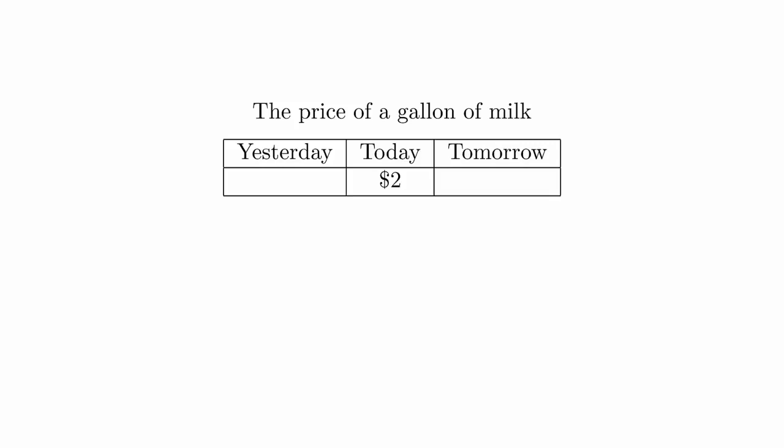Imagine if you went to the store and a gallon of milk cost $2, but it only cost $1 yesterday. And tomorrow, the cost is expected to rise to $5. Although this may sound absurd, this has actually happened many times in history. This is known as hyperinflation. How does this happen?